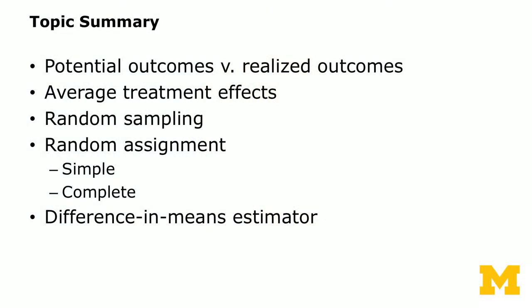So far we have talked about potential outcomes versus realized outcomes, defined the average treatment effects and random assignments. We talked about two simple forms of random assignment — simple random assignment and complete random assignment — and in the analysis we discussed the difference-in-means estimator.